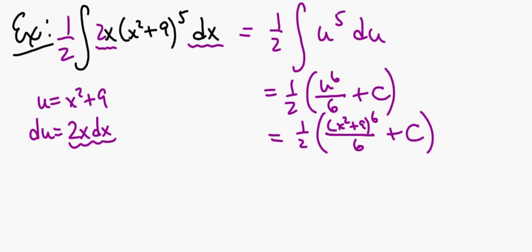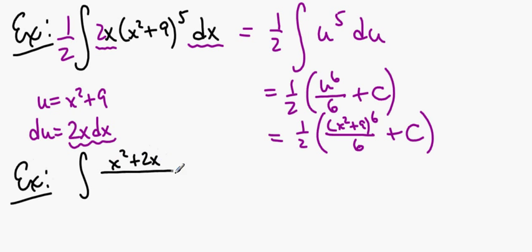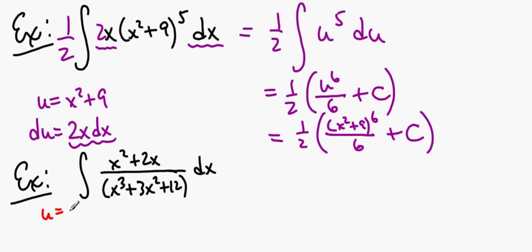One more on this slide. The integral of (x² + 2x) / (x³ + 3x² + 12)⁶ dx. You might be saying "what in Sam Hill?" — but we can do this. What makes a good u? Generally, complicated things in parentheses, things that are raised to powers, things in denominators — they all make good u's. So let's try this complicated denominator as u.